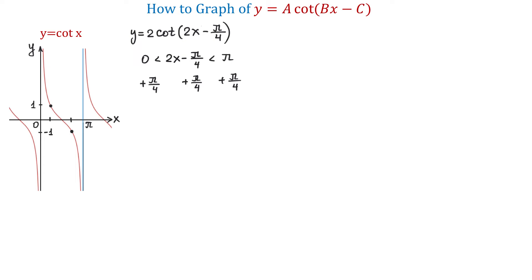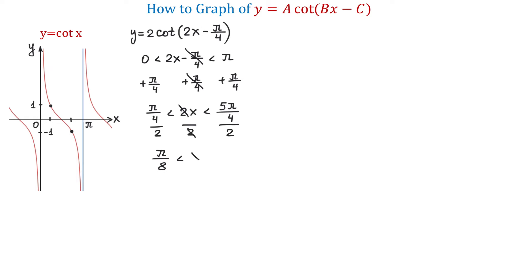On the left, 0 plus pi over 4 is pi over 4. In the middle, negative pi over 4 and positive pi over 4 cancel, giving us 2x. To the right, pi plus pi over 4 is 5 pi over 4. Now, dividing all three parts by 2: on the left we get pi over 8, in the middle 2 and 2 cancel giving x, and to the right we have 5 pi over 8. So these are the new vertical asymptotes.